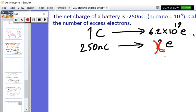And do the cross multiplication, which will give me 2.50 nanocoulombs times 6.2 times 10 to the power 18 electrons equals...